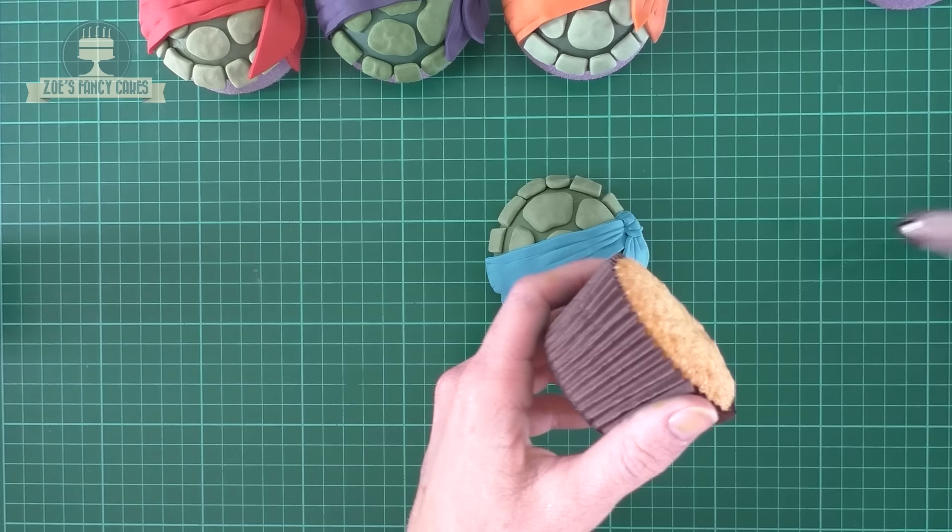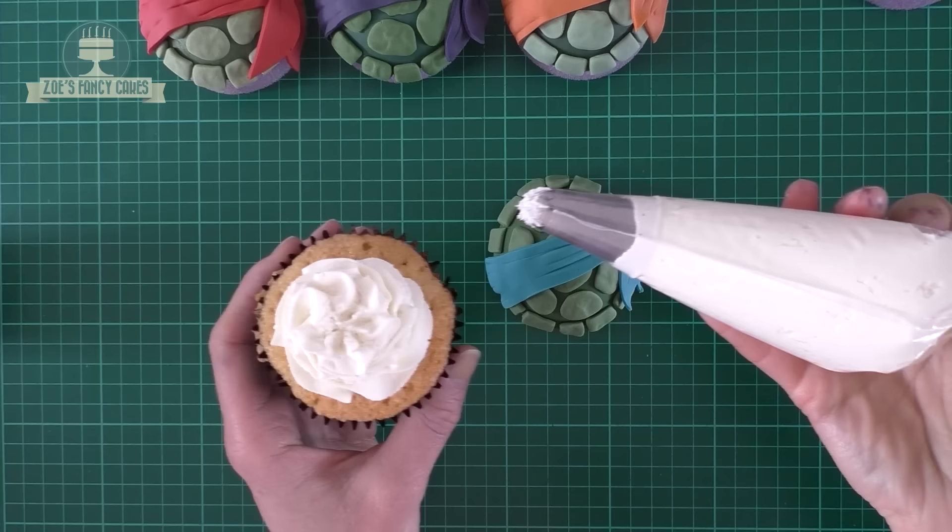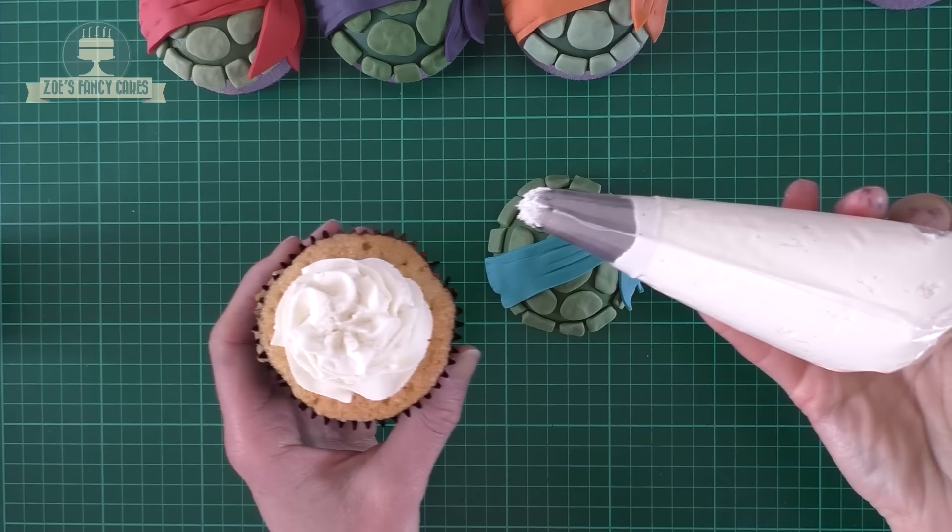To stick them to our cupcakes, we're just going to pipe a little bit of buttercream onto the top of the cupcake and just push those shells in place. So there's my four. So that's those finished.